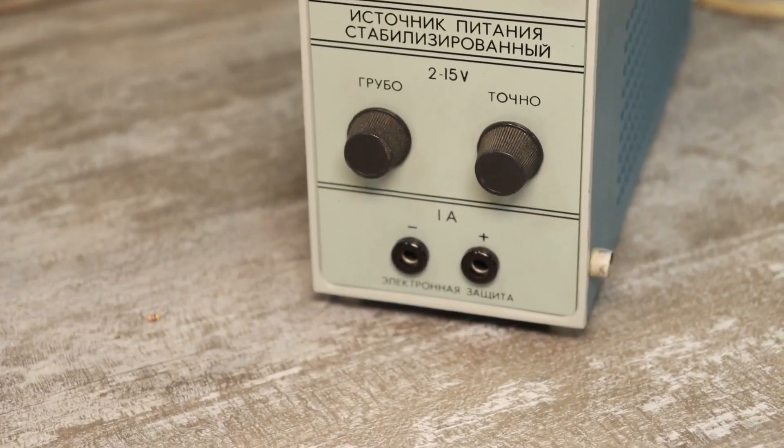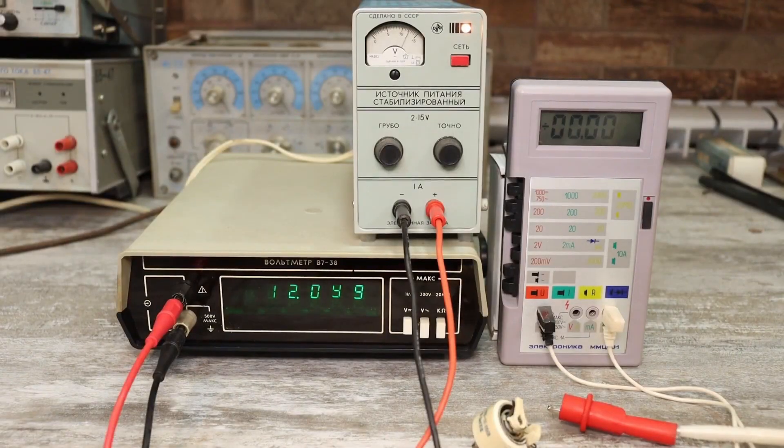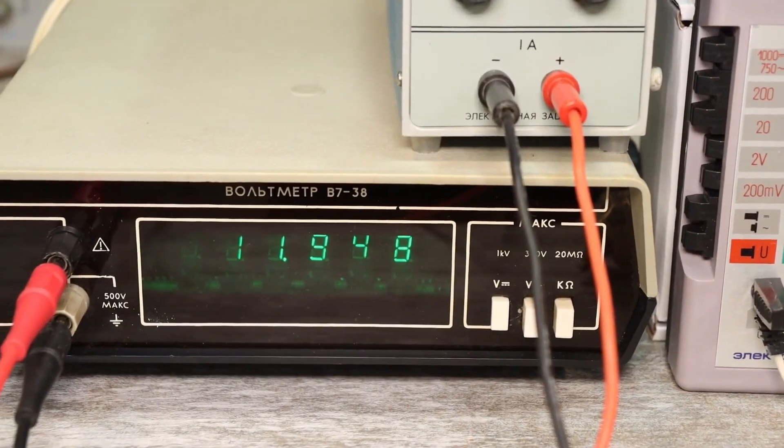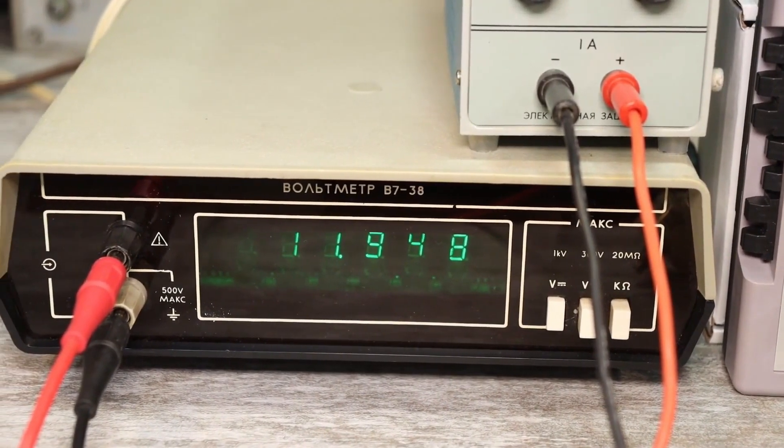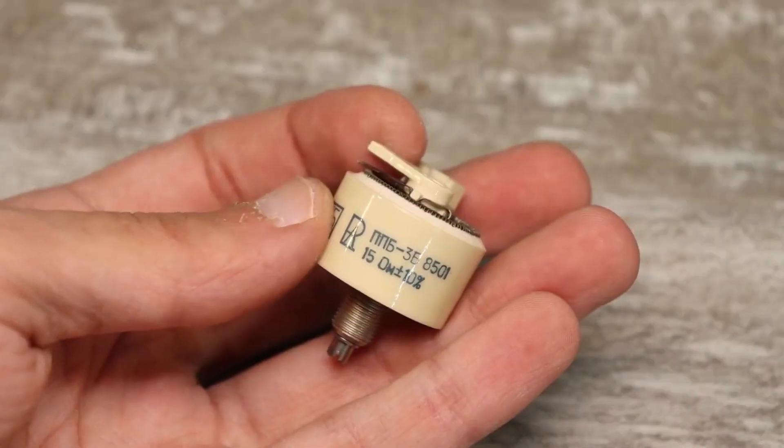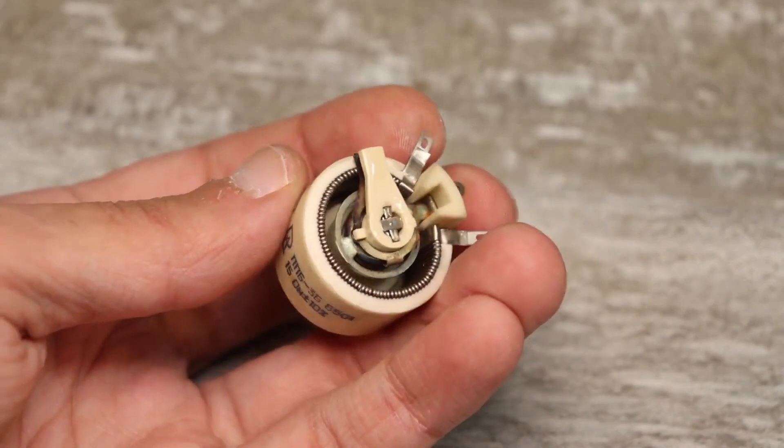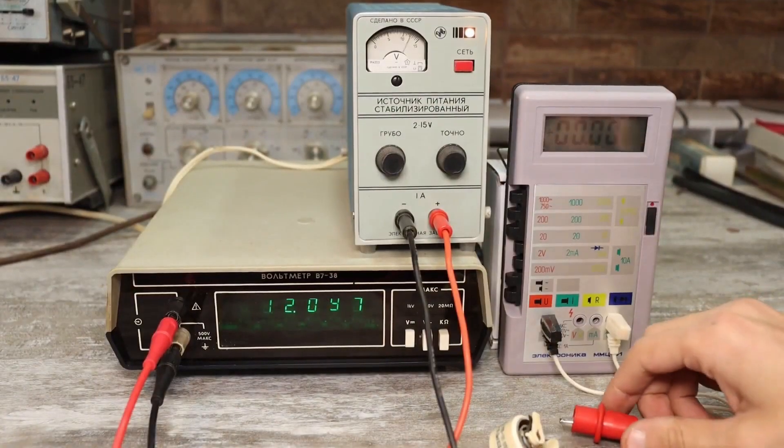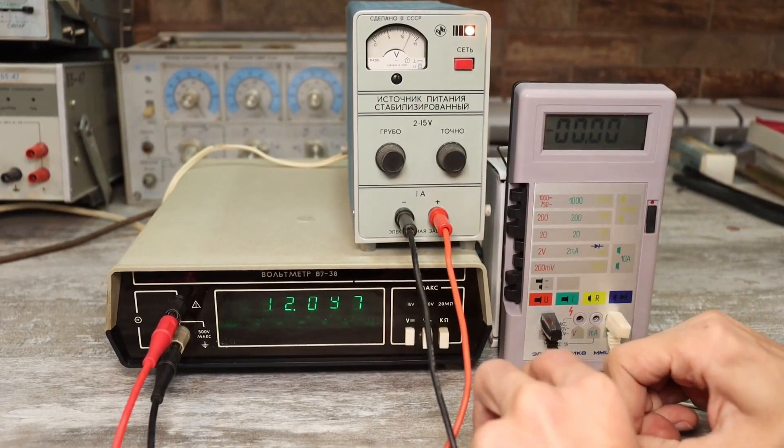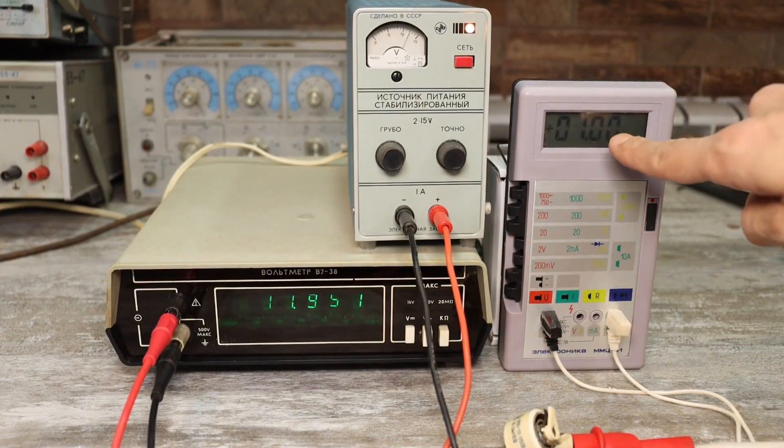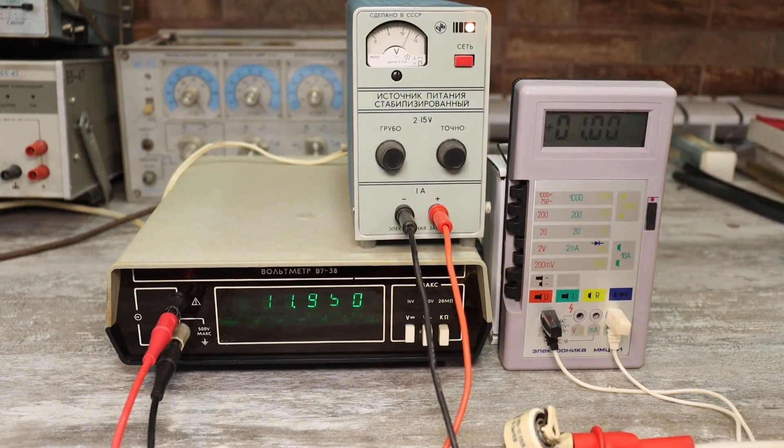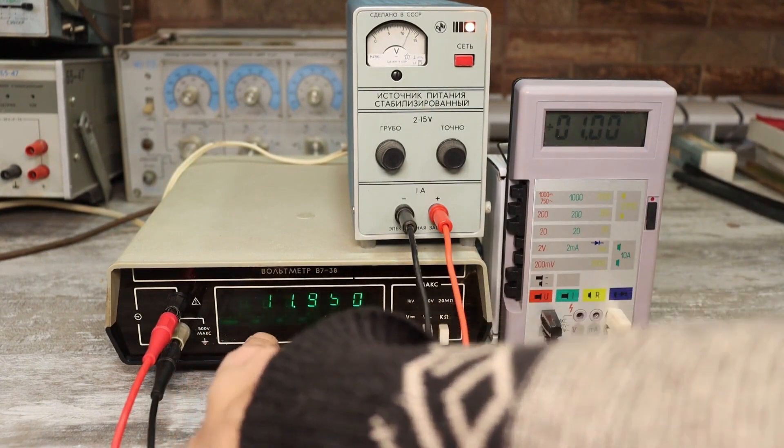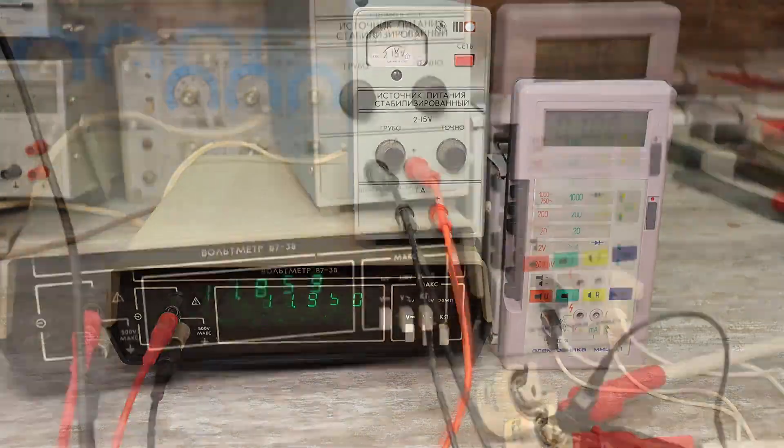Now let's check the voltage stability under load. We'll set the output voltage of the power source to 12 volts, which is shown by the lower voltmeter. There is a resistor whose resistance is selected so that when powered by 12 volts the current in the circuit is about 1 ampere. The flowing current is shown by the multimeter on the right. When the load is connected we see a voltage drop of around 60 millivolts, which is quite good for this little device.